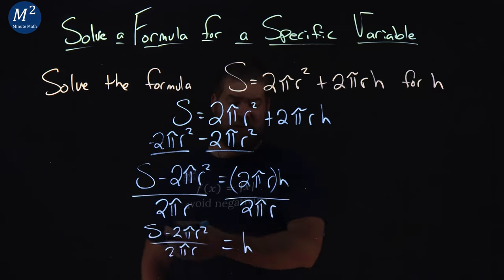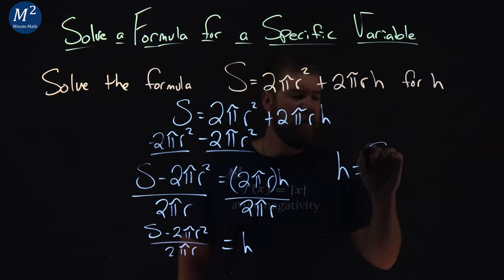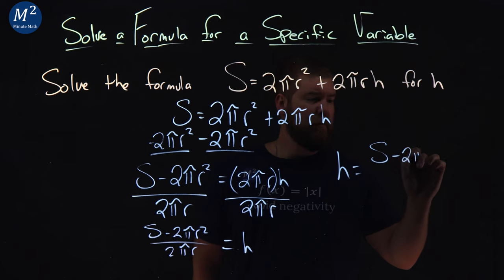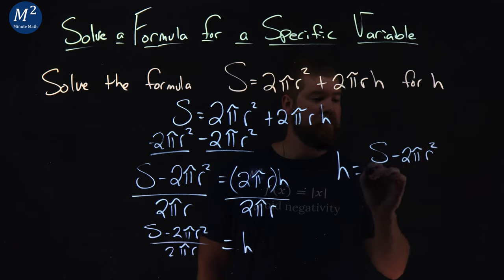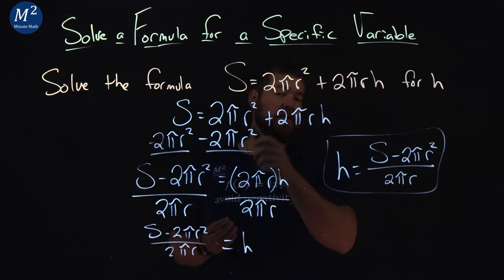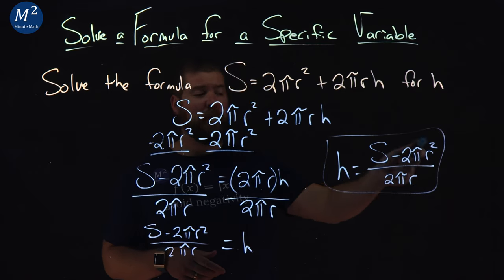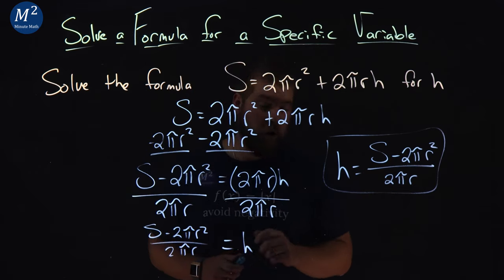Sometimes it's actually nice this way. Let's rewrite it with H written first. S minus 2πR² over 2πR. There we have it - our final answer. We've solved for H from our original equation: H equals S minus 2πR² over 2πR.